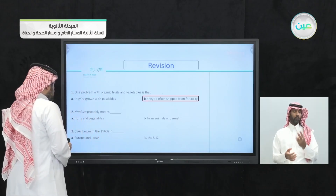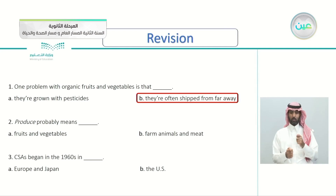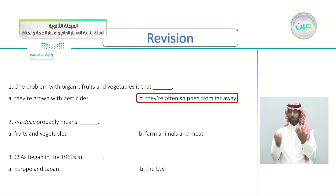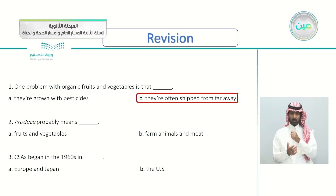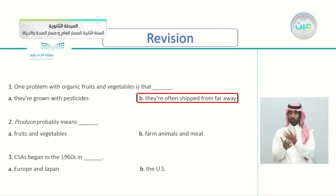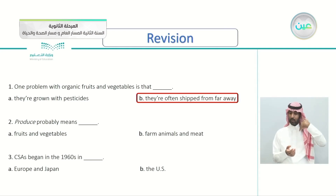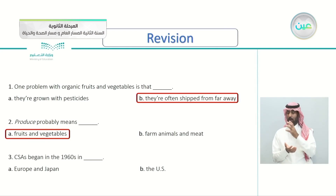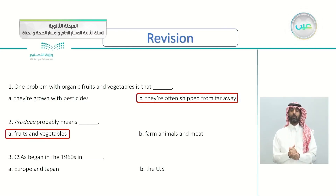Question two: 'produce' probably means A, fruits and vegetables, or B, farm animals and meat. This is an easy one — that's correct, it's A. When the article says 'produce,' it means fruits and vegetables.